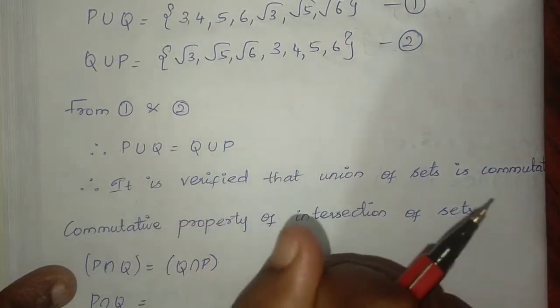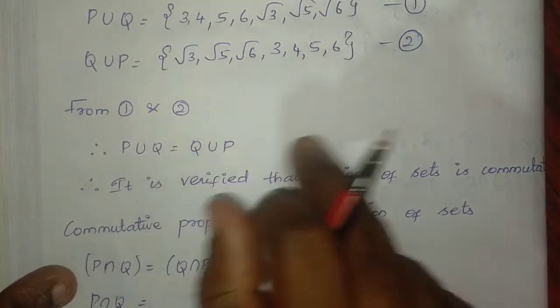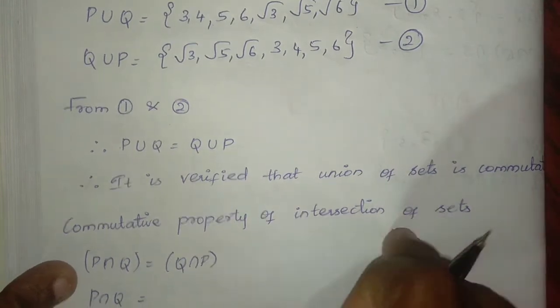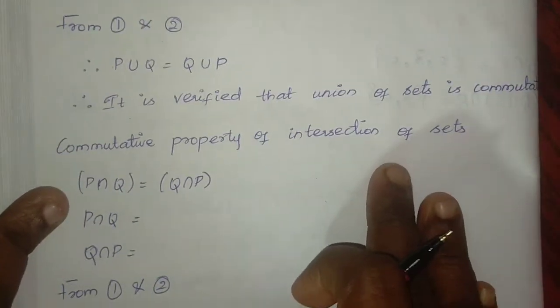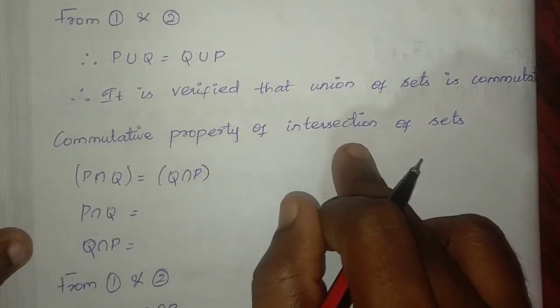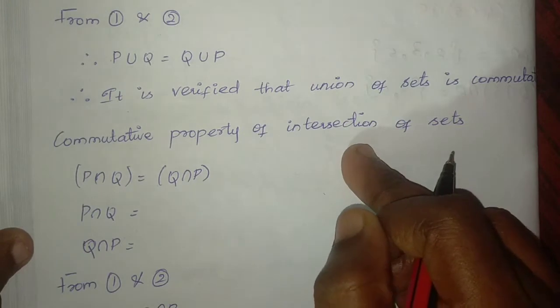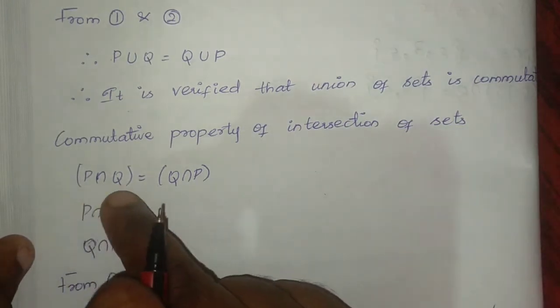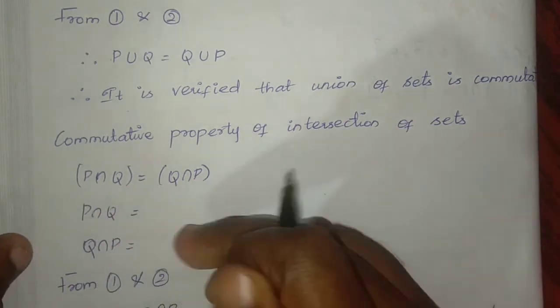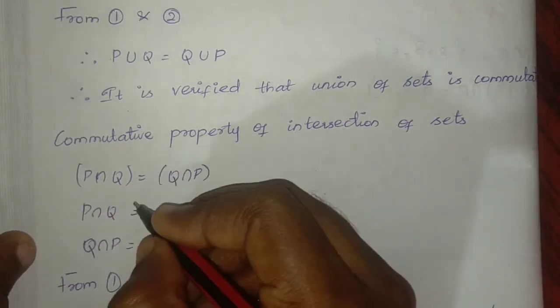The two results are equal. Union of sets — commutative property number one is verified. P union Q equals Q union P.